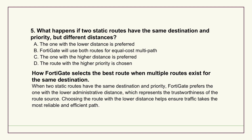Routing decisions - how the FortiGate decides where to send traffic. Question five gives a scenario: you have two static routes configured with the same destination network, and they even have the same priority setting, but they have different distance values. What happens? The source explanation says the route with a lower distance value is preferred. Distance - administrative distance - reflects how trustworthy the route source is. For static routes you set this manually, so the FortiGate picks the one marked with a lower distance number, considering it more reliable or preferred.